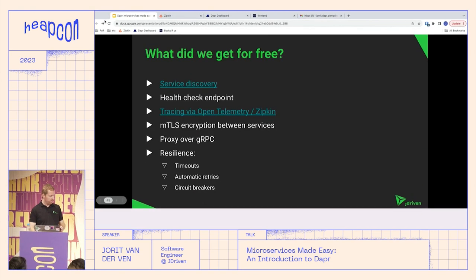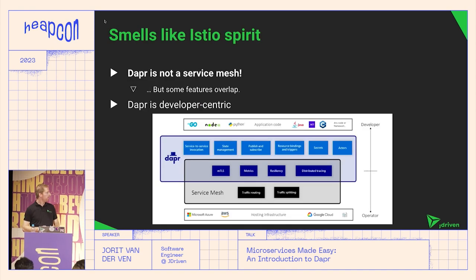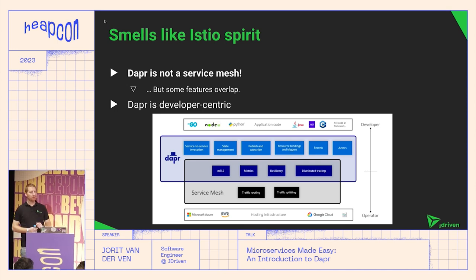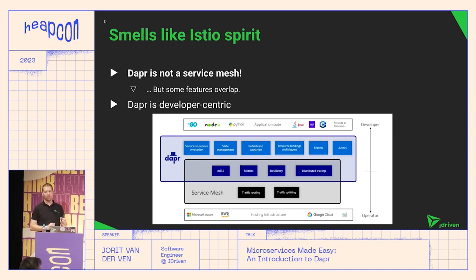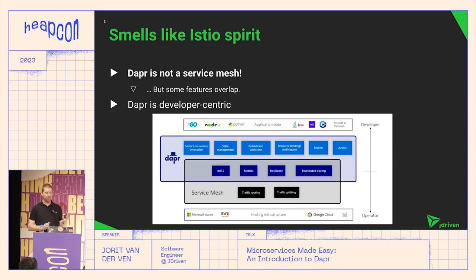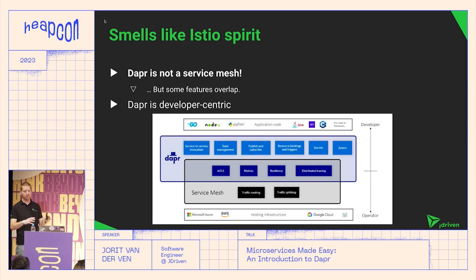Besides this, we also got a health check endpoint automatically, encryption, resilience, and timeouts. Some of you familiar with Kubernetes and service meshes might think this sounds like Istio. There is some overlap between service meshes and Dapr, but Dapr is not a service mesh. Dapr can integrate well with Istio — the service mesh handles tracing in your infrastructure and Dapr provides easy developer access. The main difference is that a service mesh is focused on infrastructure, while Dapr is developer-centric.